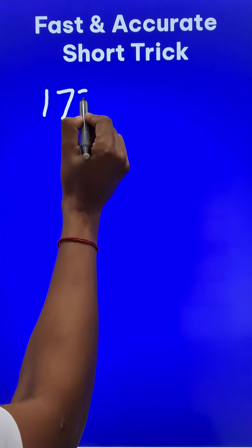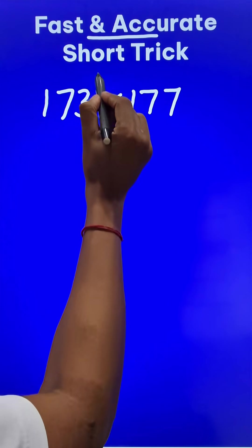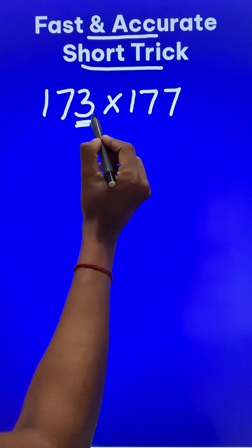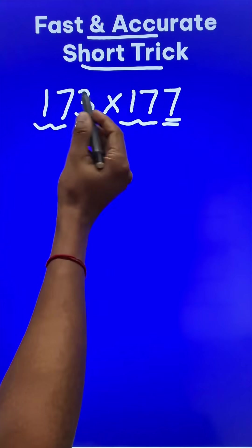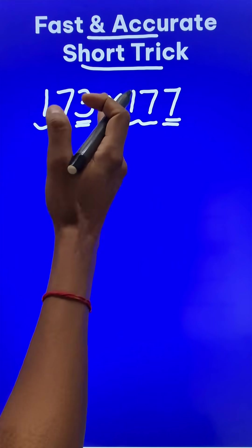Let us multiply 173 and 177 using this fast and accurate short trick. What is so special about these two numbers? If you see the unit digits 3 and 7, they add up to 10, and the remaining part of the number, 17 and 17, is the same. Under these conditions, these two numbers can be multiplied very quickly.